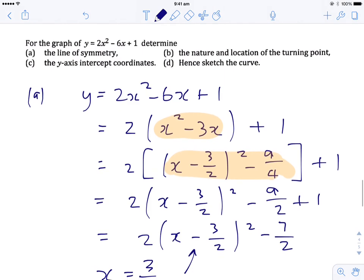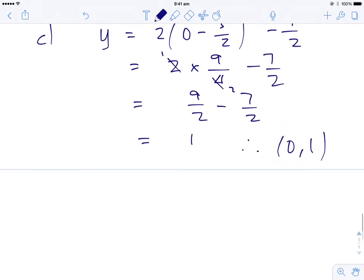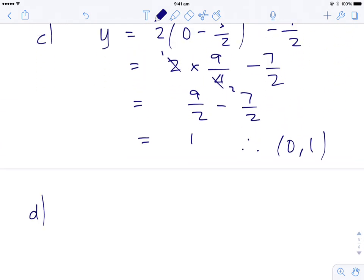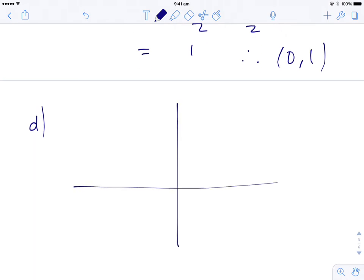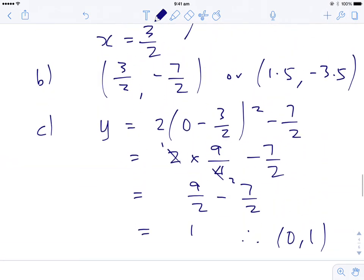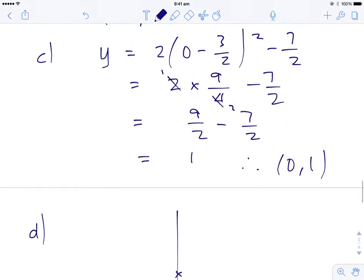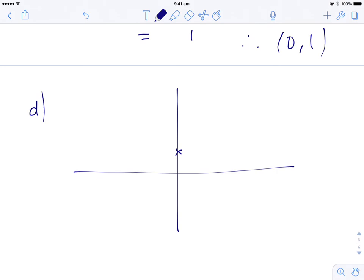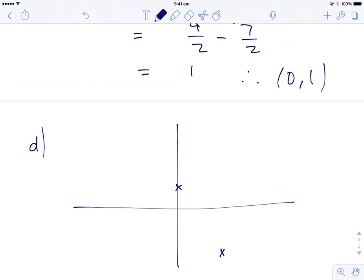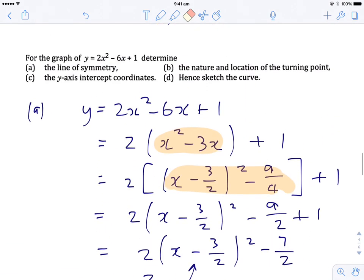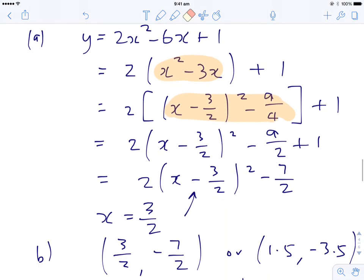And finally, sketch the curve. Hence, sketch the curve. So let's put it all together. And again, this is a real rough sketch. So it's going through 1 on the y-axis. The turning point is 1.5, negative 3.5 down here somewhere. It's definitely going to be this way up because the x squared term is positive. And that's it.